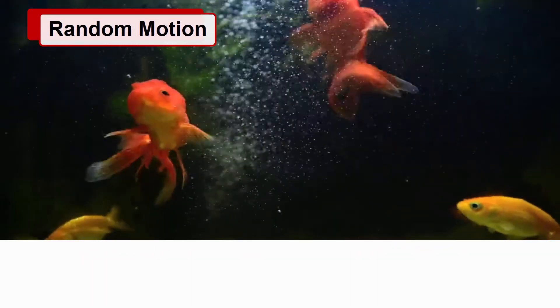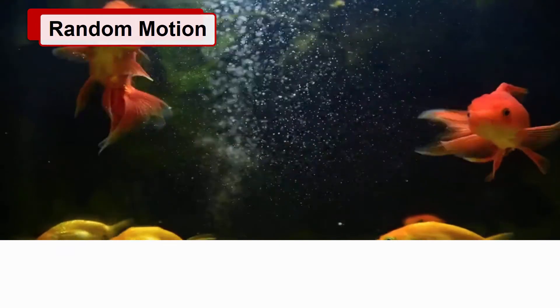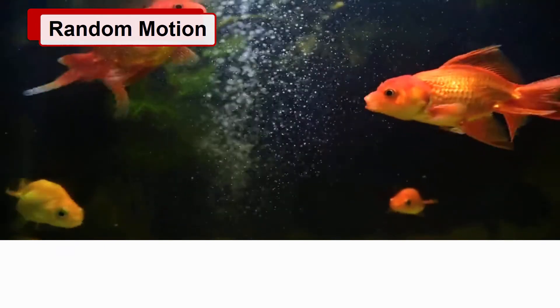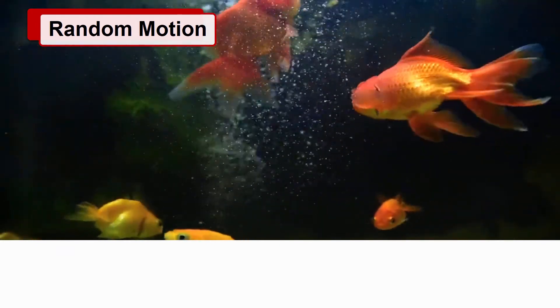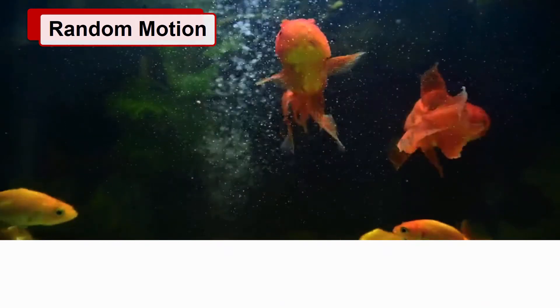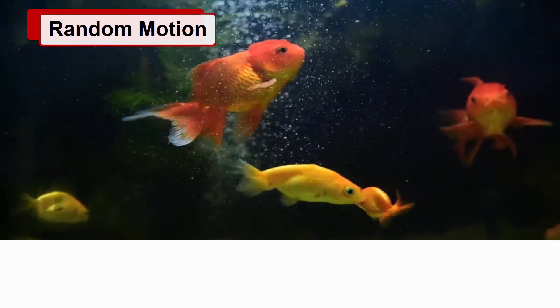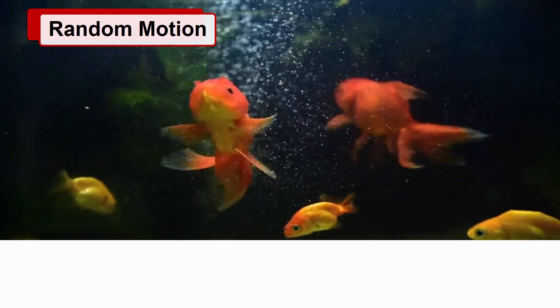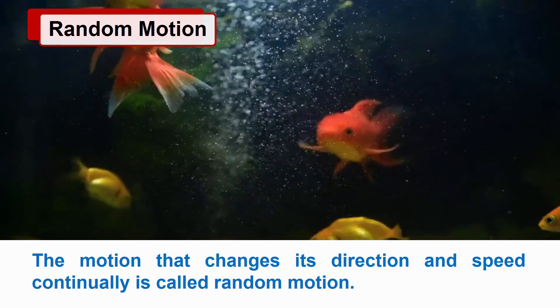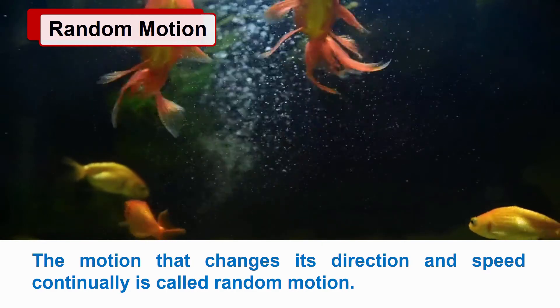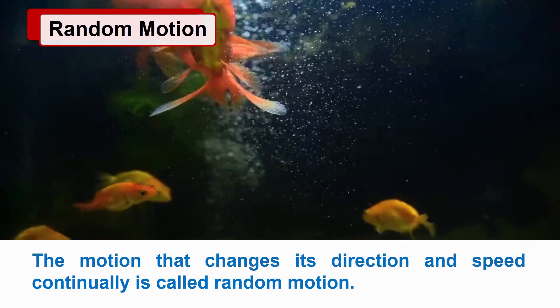Random motion. Can you identify what kind of motion do the fishes in the tank are following? Here, we can see there is no definite direction of motion of fishes. So we can say its motion is random. The motion that changes its direction and speed continually is called random motion.